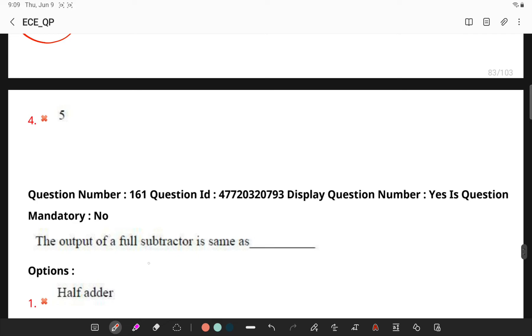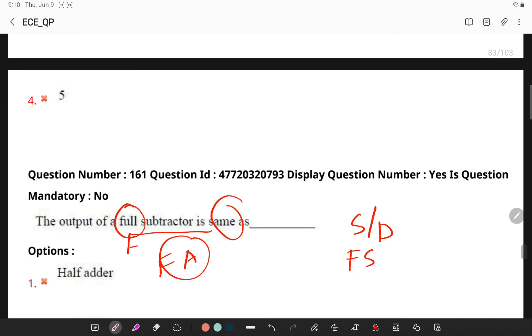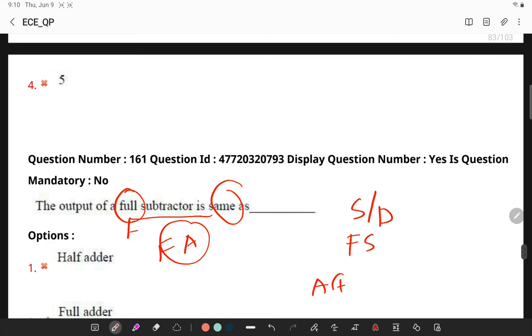The output of a full subtractor is same as a full adder because the sum and difference output of a full adder and full subtractor are same. Here, full subtractor. So, full adder and full subtractor are the same. So, it is the expression is A XOR B XOR C and only the carry expression will be changing.